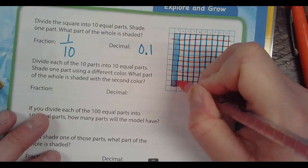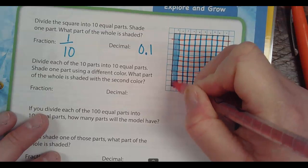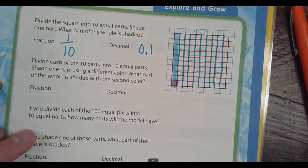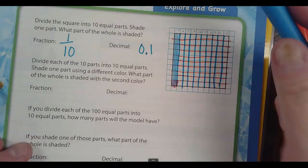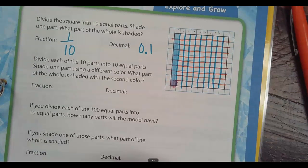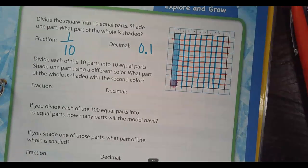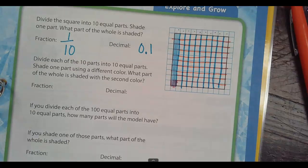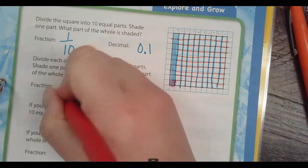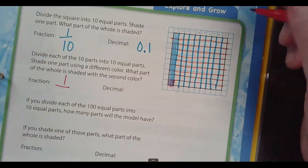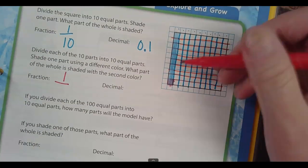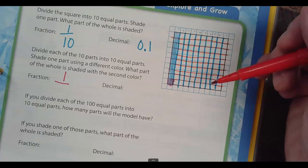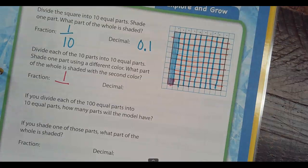If I color this one red, it says color one part using a different color. Can you see that okay? So now I have one colored with the reddish color. I have one part out of how many pieces? If I count all the little squares, how many little squares are in the whole thing? One out of a hundred.